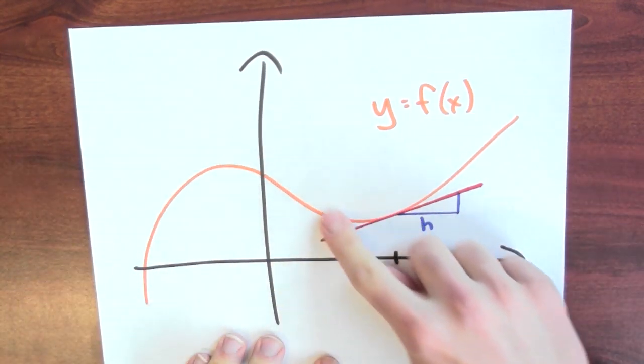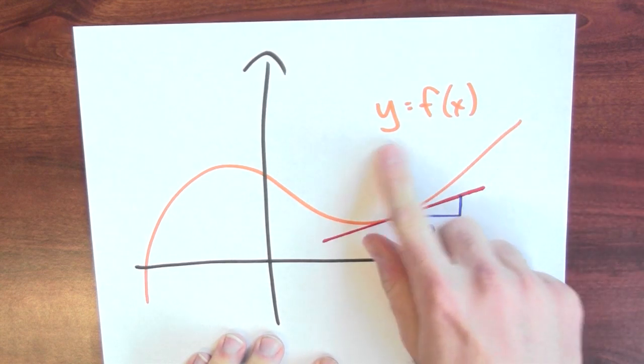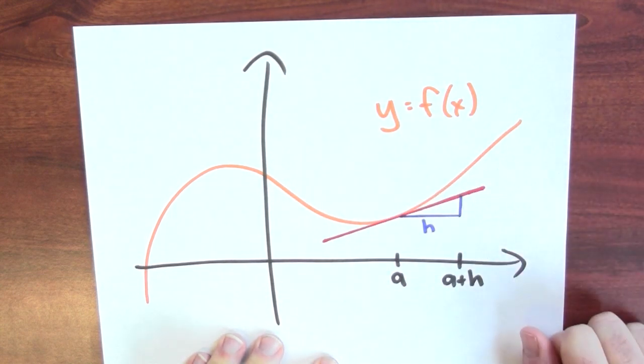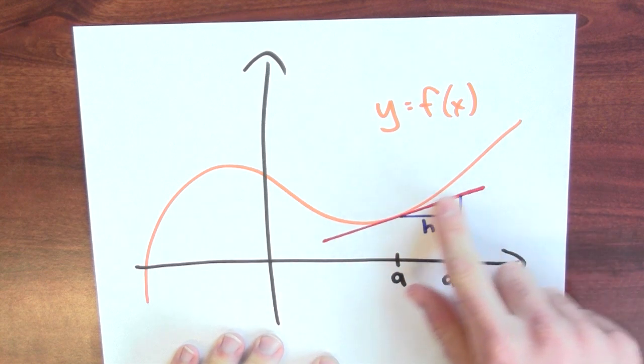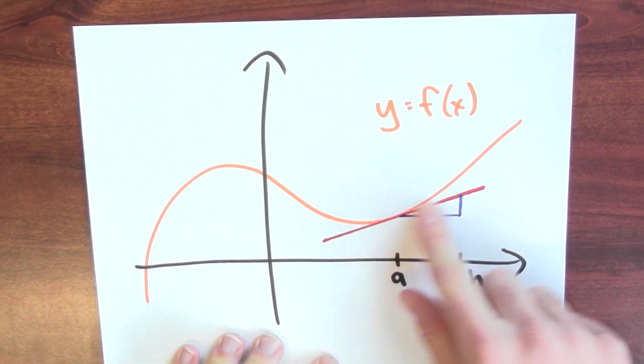Here I've drawn in orange the graph of some random function y equals f of x. And at this point, a, f of a, I've drawn in red the tangent line to the graph.